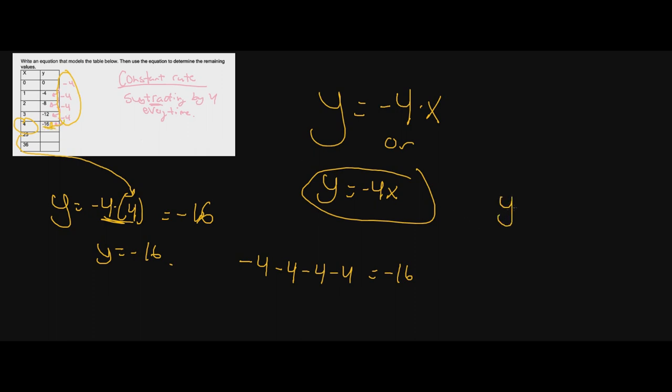All right, and there it is, my friends. There is our equation, negative 4x. Okay, because we're subtracting by four every time. So last problem, last one, I promise you.